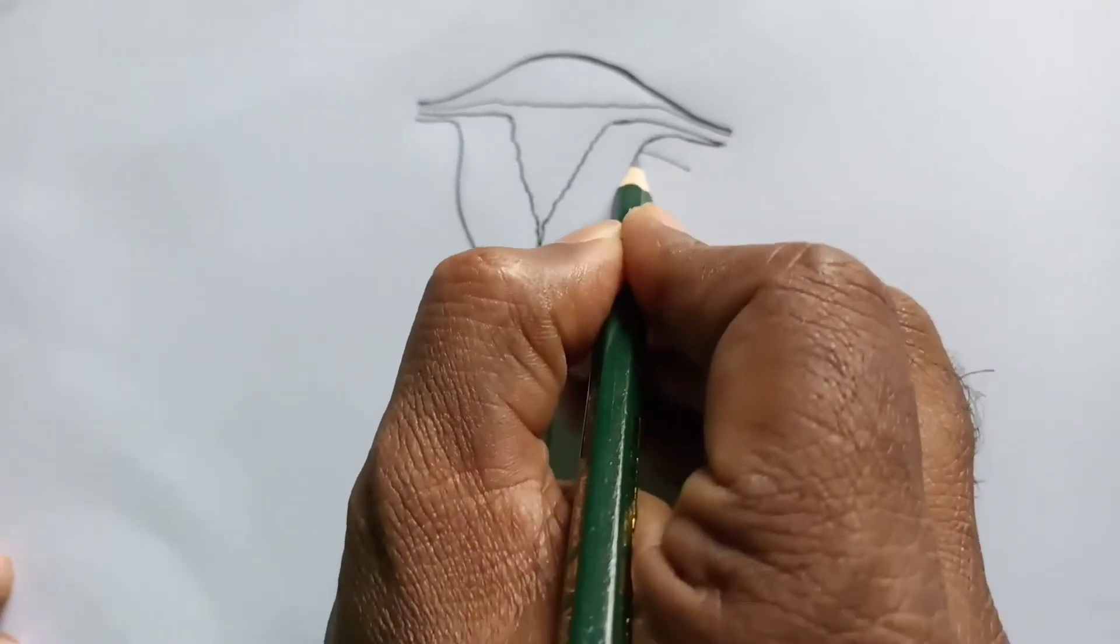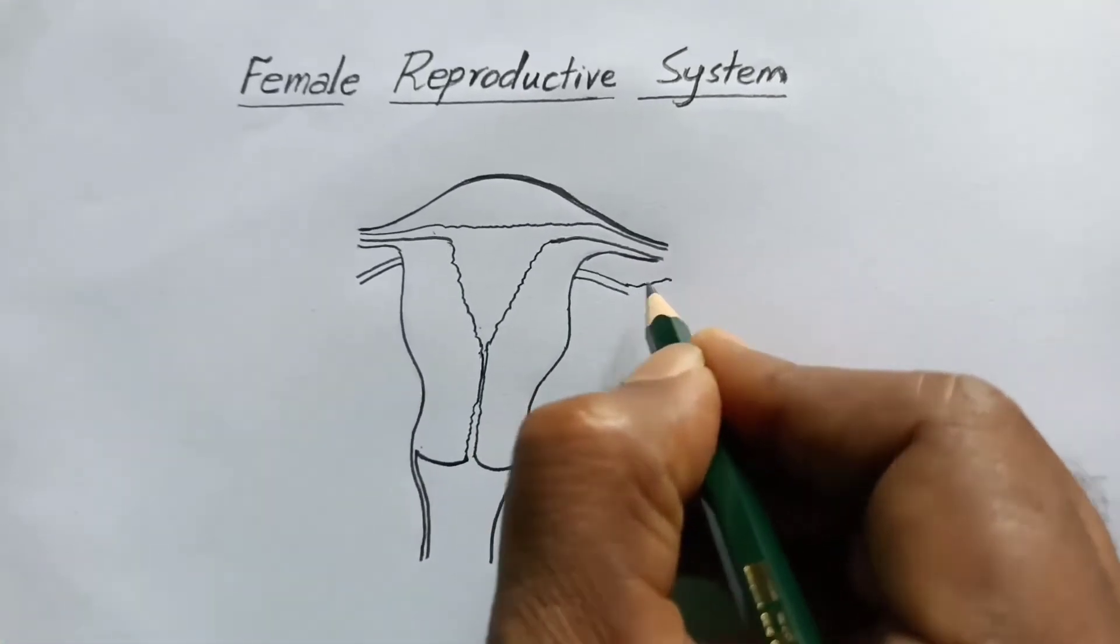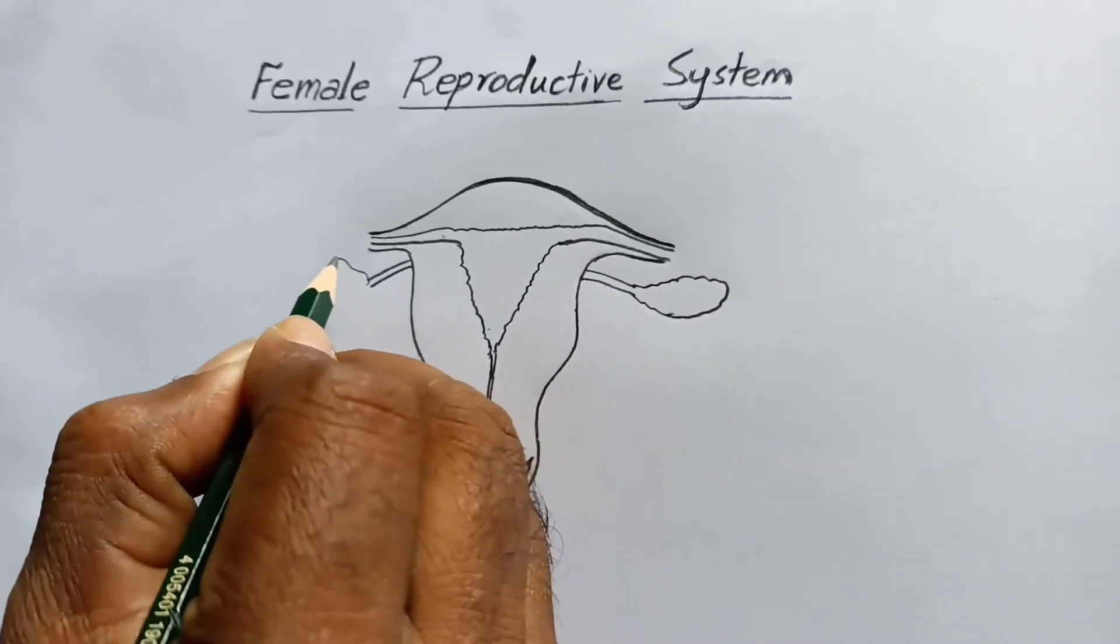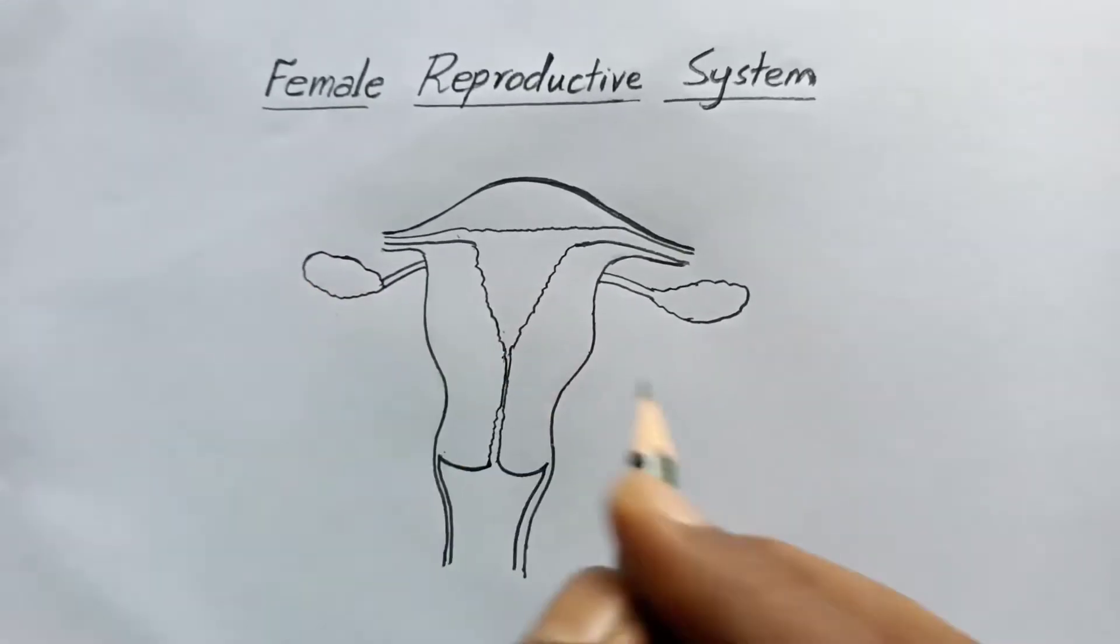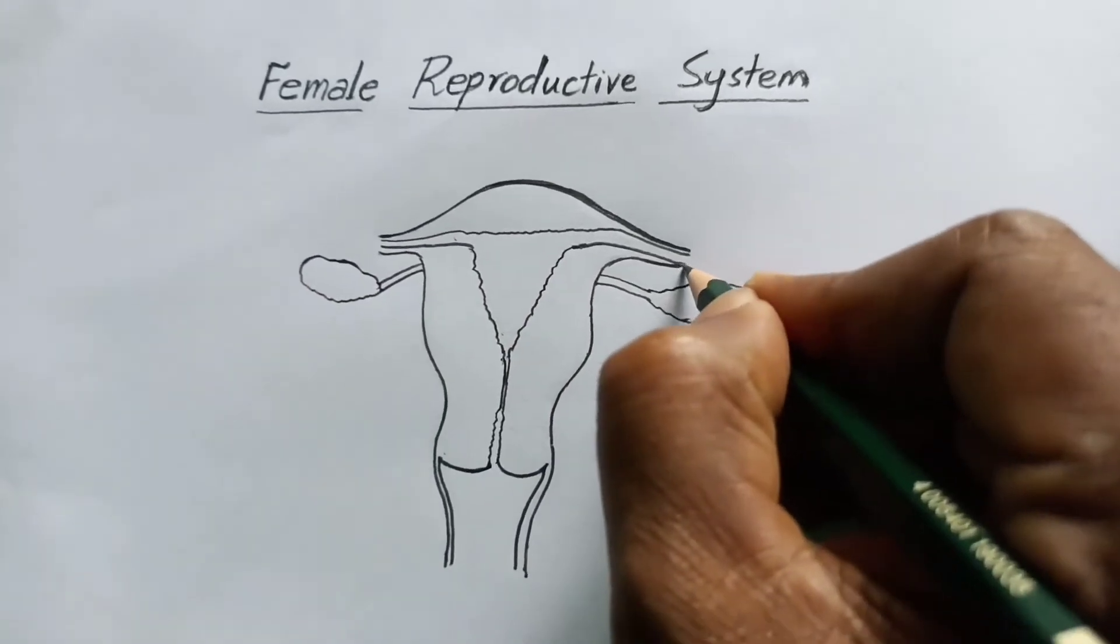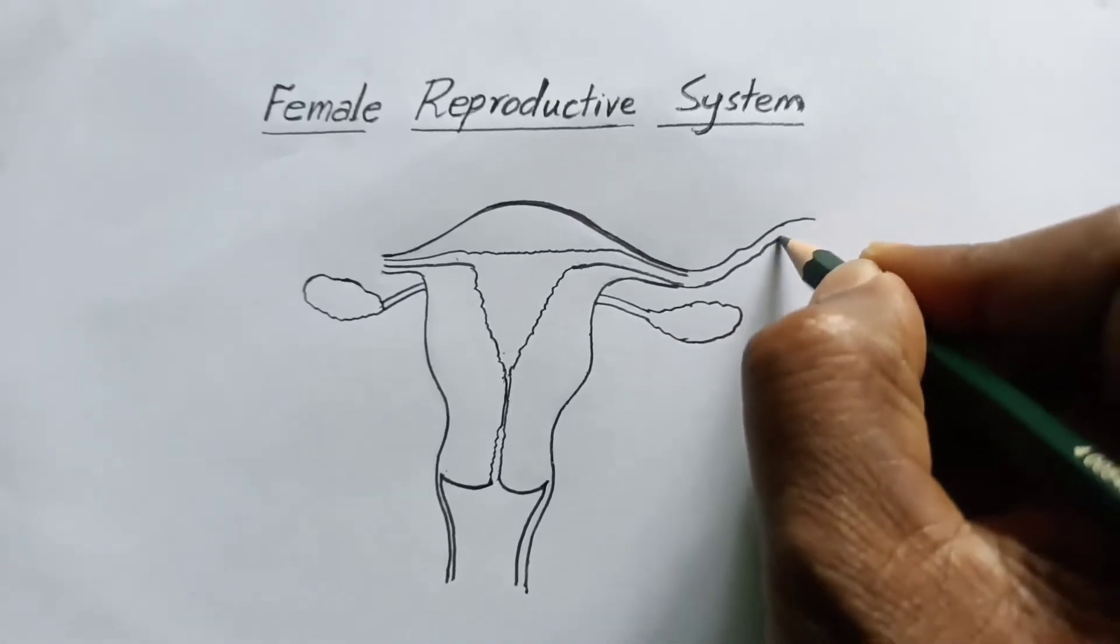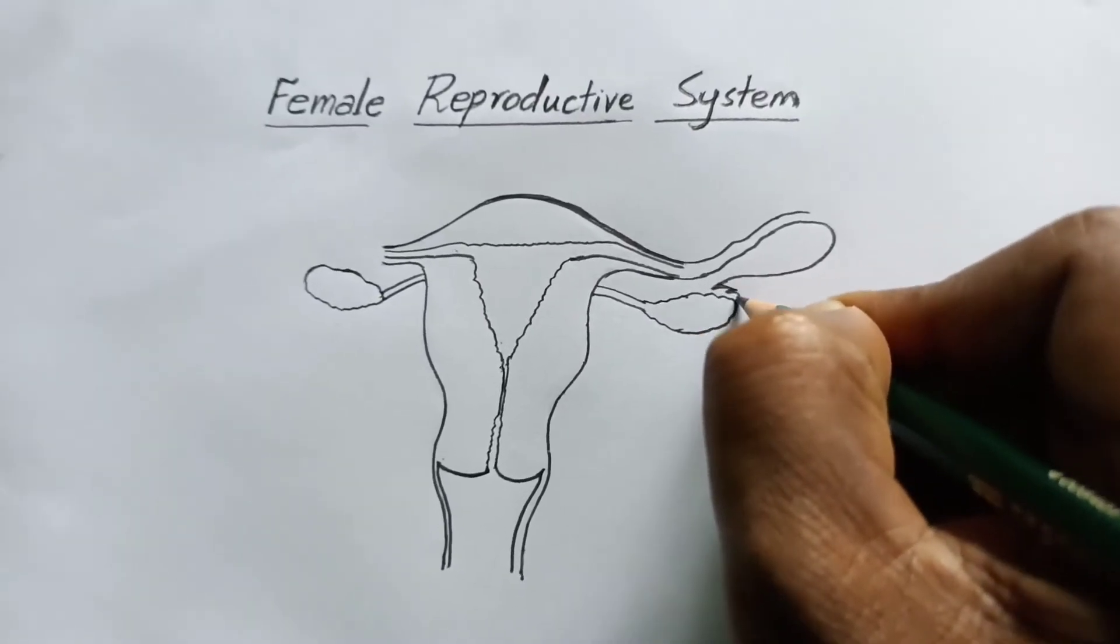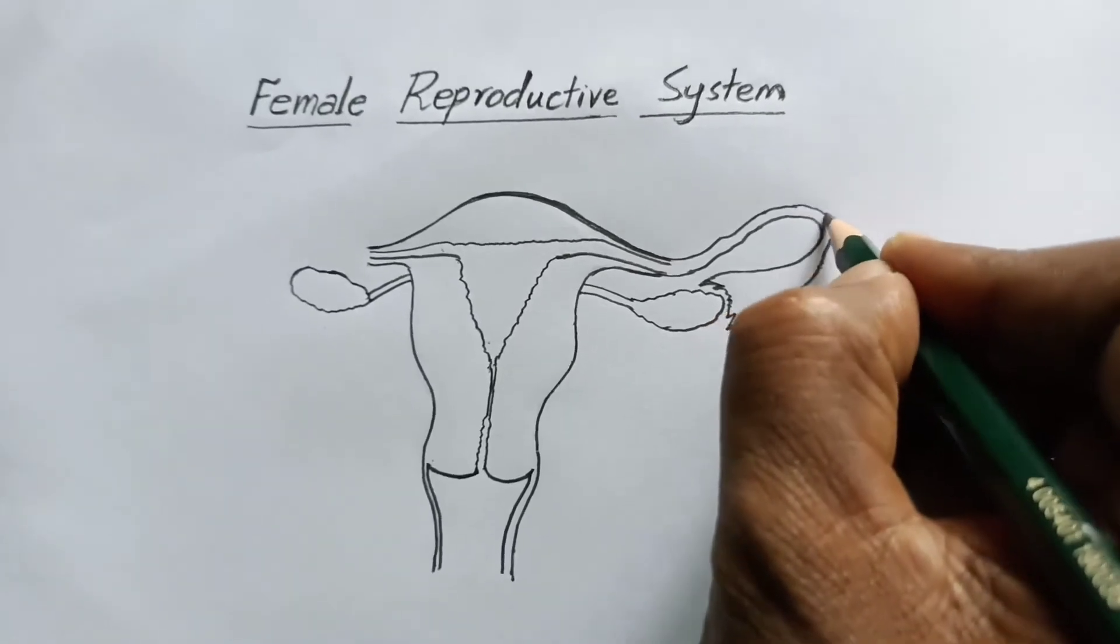Now from here, I'm drawing a pair of ovaries on both sides of the uterus. You draw like this. This is the oviduct, also known as the fallopian tube. It opens into a funnel at the ovaries.